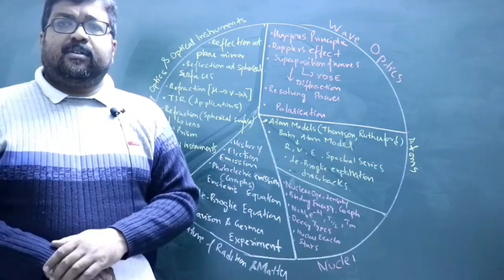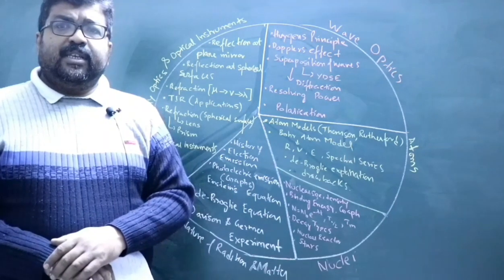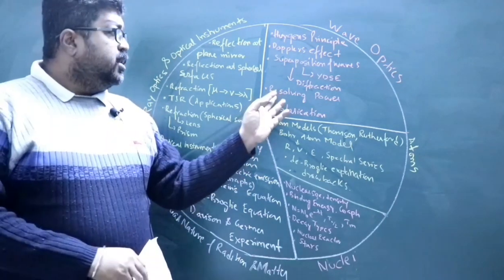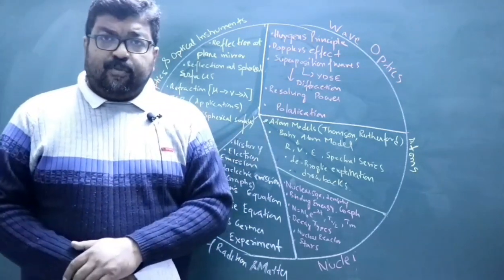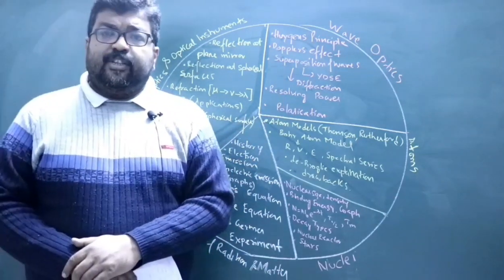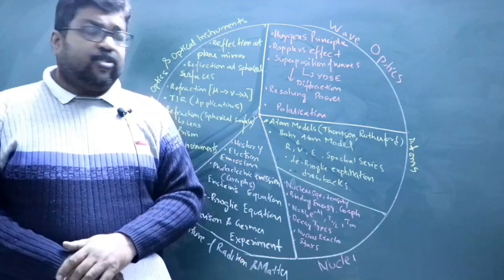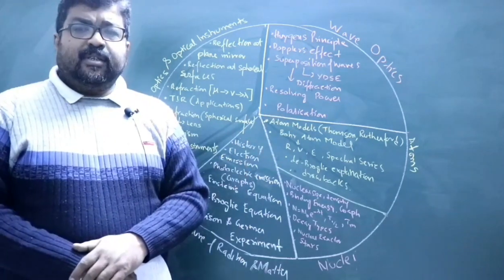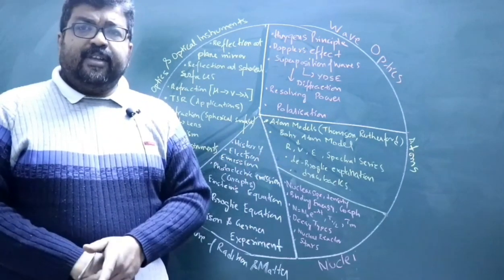Then you have the phenomenon of diffraction, that is superposition of light from a single slit. Then you have the resolving power of optical instruments - resolving power of telescope and resolving power of microscope. Then in the topic polarization: polarization by scattering and polarization by reflection. In the topic polarization by reflection, you have Brewster's law.